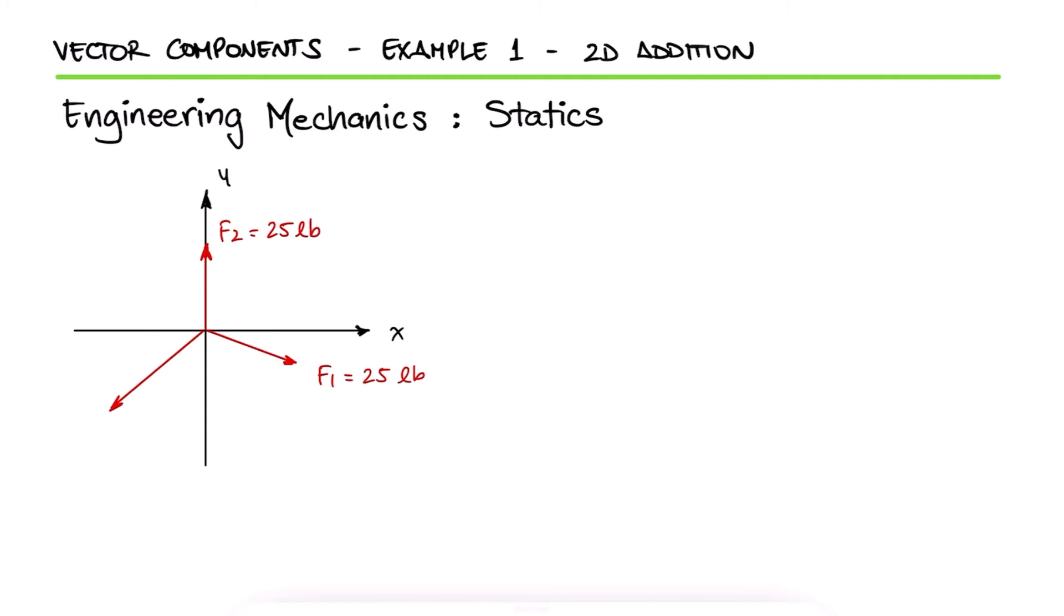If the three vectors shown are added together, what should the angle theta be so that the horizontal component of the resulting vector is zero? What is the resulting vector magnitude of v?